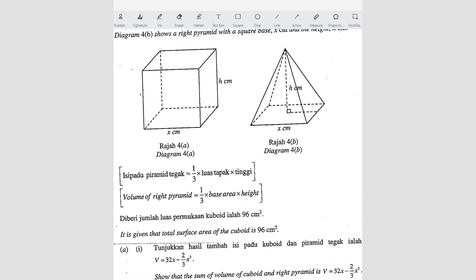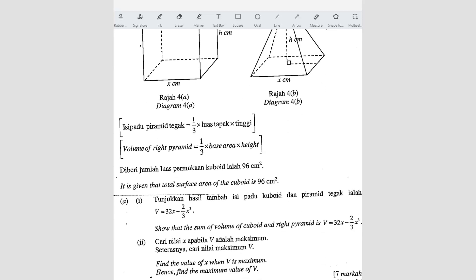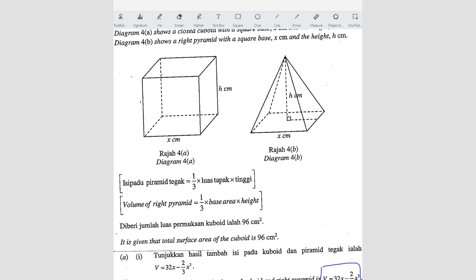It's given that the total surface area of the cuboid is 96 cm². Show that the sum of volume of cuboid and right pyramid is... so they want you to prove this. The total volume of both shapes is this. They want you to show this. So how are we going to do? First of all, if you want to find the volume, we have to add up both of the shapes.